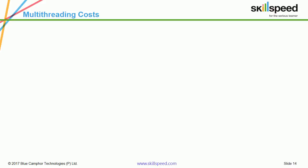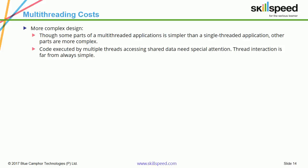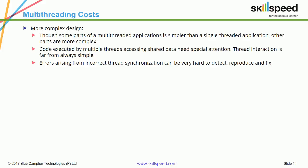Now, the cost or disadvantages of multi-threading. First, more complex design: though some parts of a multi-threaded application are simpler than a single-threaded one, other parts are more complex. Code executed by multiple threads accessing shared data needs special attention. Thread interaction is far from simple, and the errors arising from incorrect thread synchronization can be very hard to detect, reproduce, and fix.